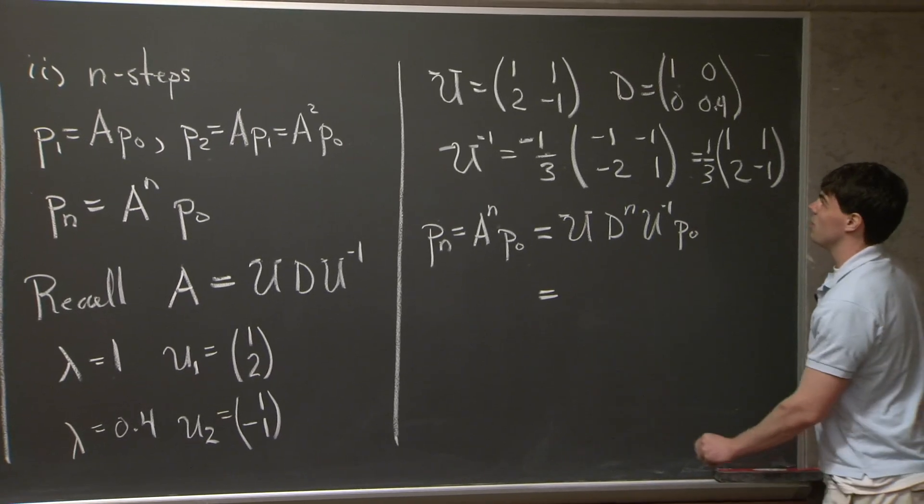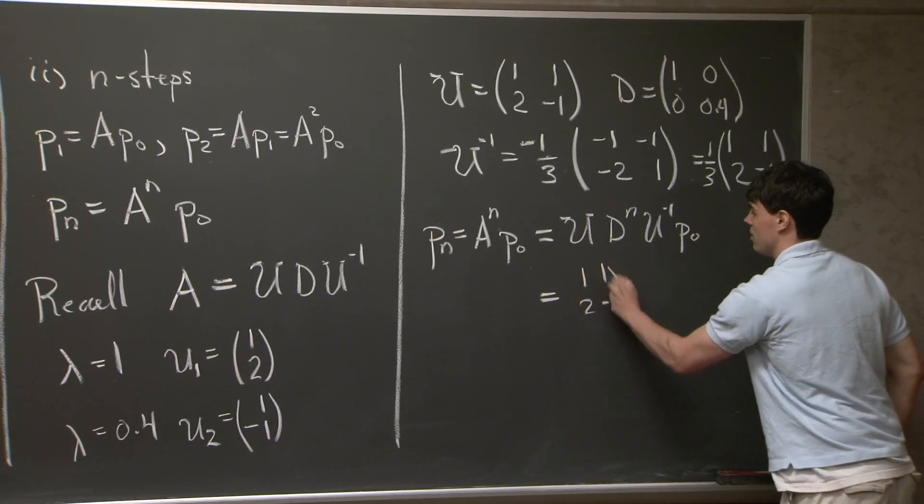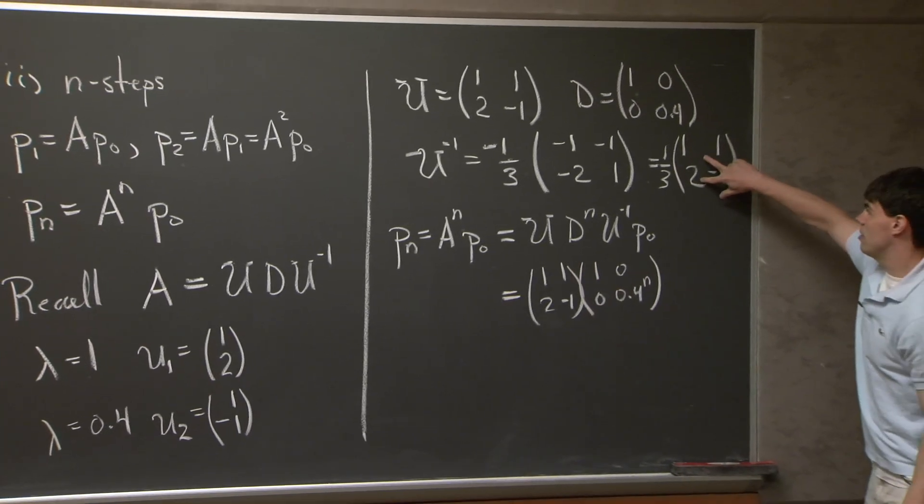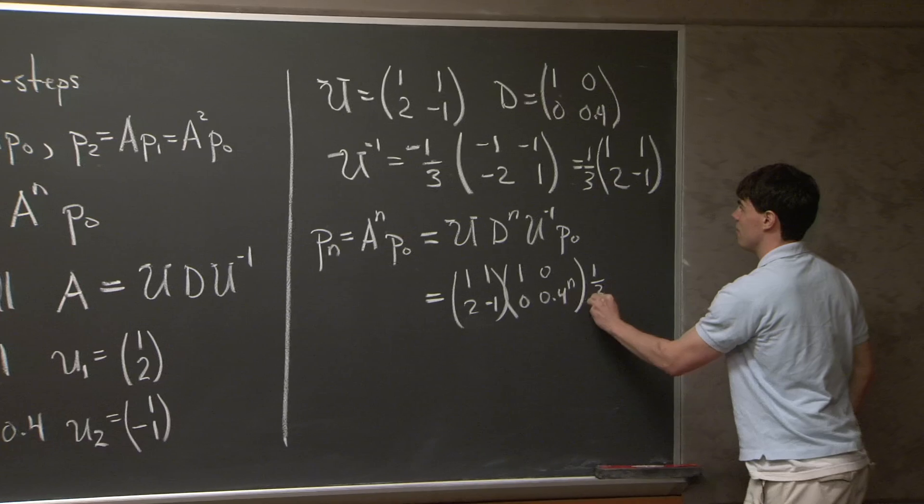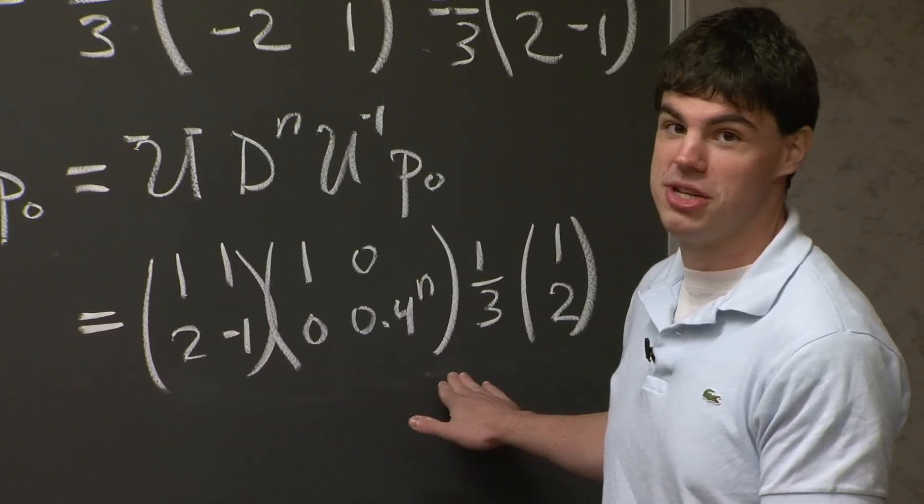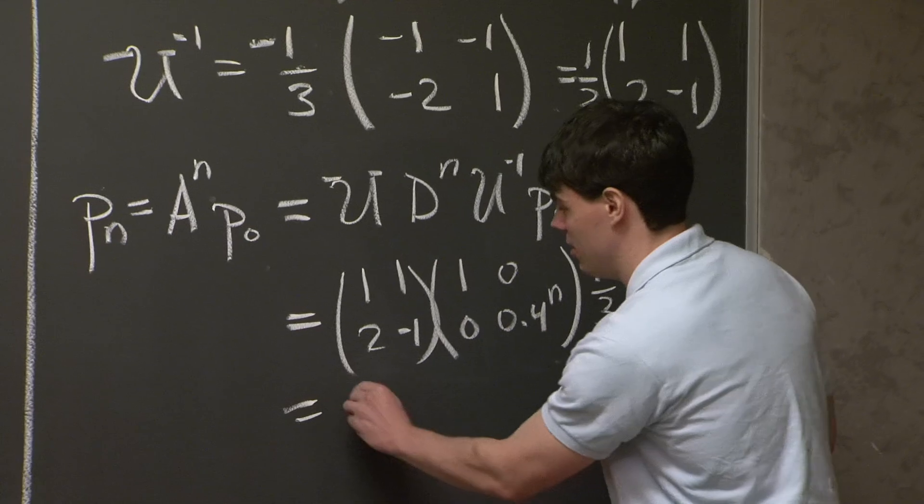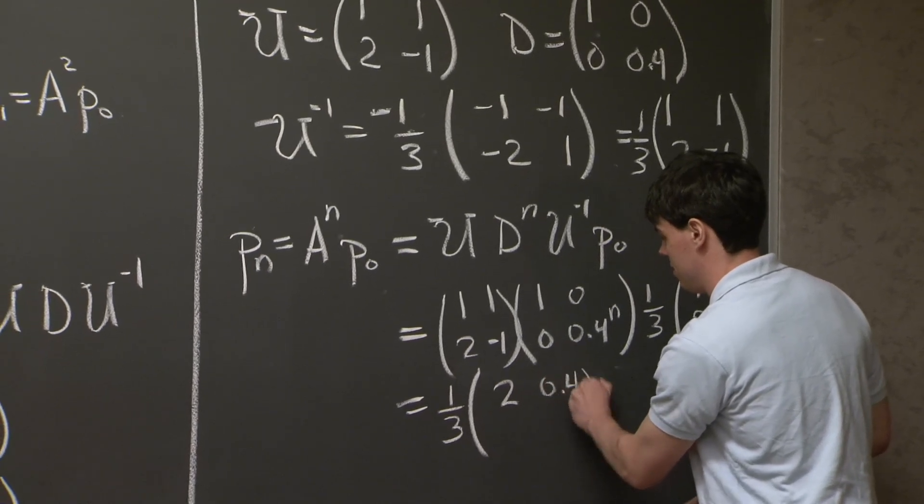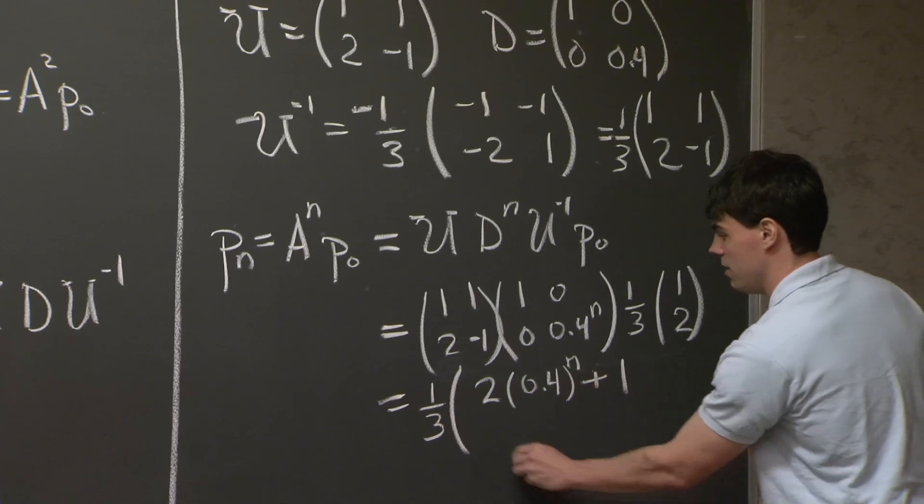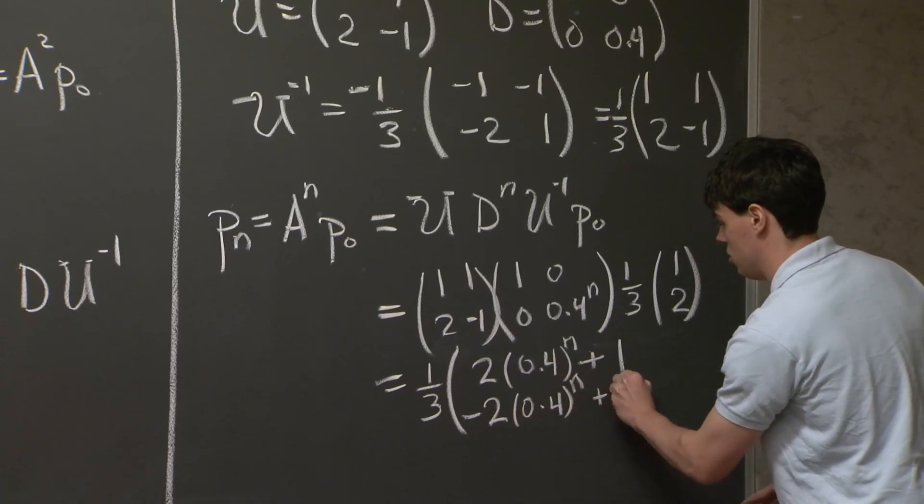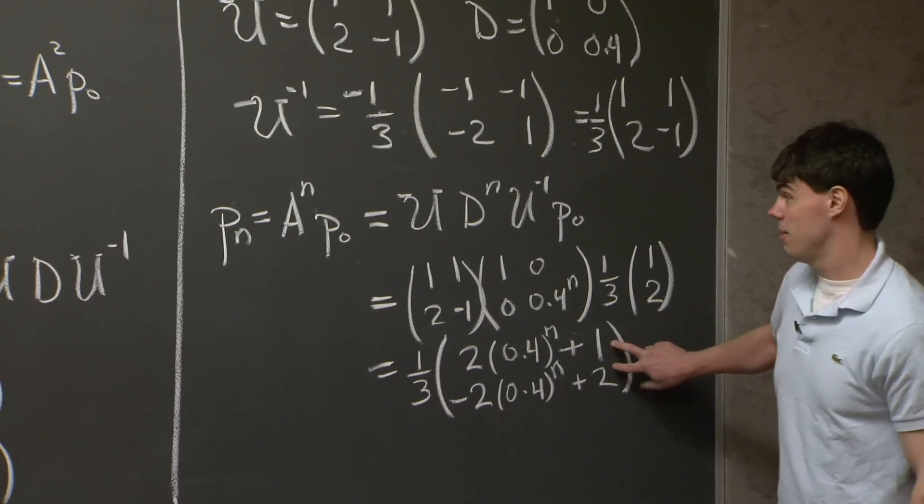So if we do this, we end up obtaining 1, 2, and we're going to do this is going to be to the power of n, 1 third, 1, 2. OK, so for this last part, I'm just going to write down the final answer, and I'll let you work out the multiplication of matrices. So we have for pn, 1 third, 2 times 0.4 to the n, plus 1, minus 2, 0.4 to the n, plus 2. And this is the final vector for p of n.